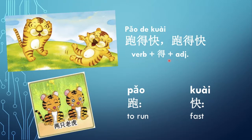This structure requires the verb to be a single word — 跑. If it's two words, the structure is a little different. For example, if you say 'he runs very slow,' we say 她跑得慢 — 慢 means 'slow.' If you say 'she runs fast,' we say 她跑得快.